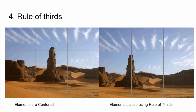Another tip is the rule of thirds. Often when we take photos we try to center the subject right in the middle, but the rule of thirds says to divide your photograph into thirds horizontally and vertically, then place your elements of interest along those lines. The argument is that it looks more natural and organic, and provides more energy and attention, giving a better overall feeling to the photo.